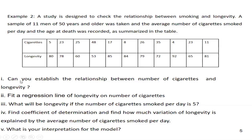I give you some questions. The first question is: find the relationship between number of cigarettes and longevity. If you find the relationship, then you can go forward. If there is no relation or very little relation, the regression analysis will be meaningless. So the first step is to check the relationship between the two variables — the dependent variable and the independent variable. This is a very important part.